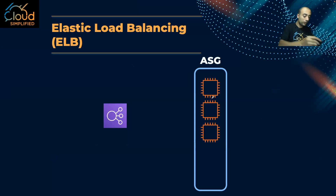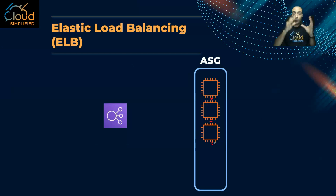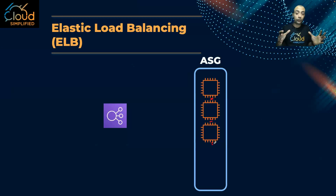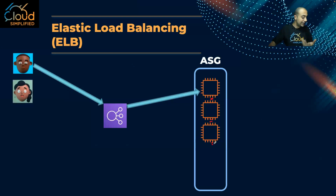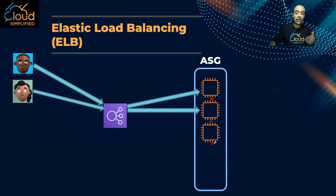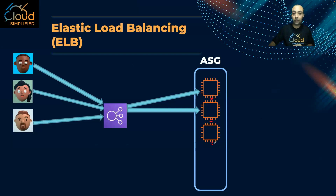Let's look at an example. Here we have three EC2 instances that are part of an auto scaling group — it's useful to understand how these services work together. The first user connects to the ELB and gets load balanced to one server. The second user lands on the ELB and gets load balanced to another server. The third user lands on the ELB and gets routed to a different server.